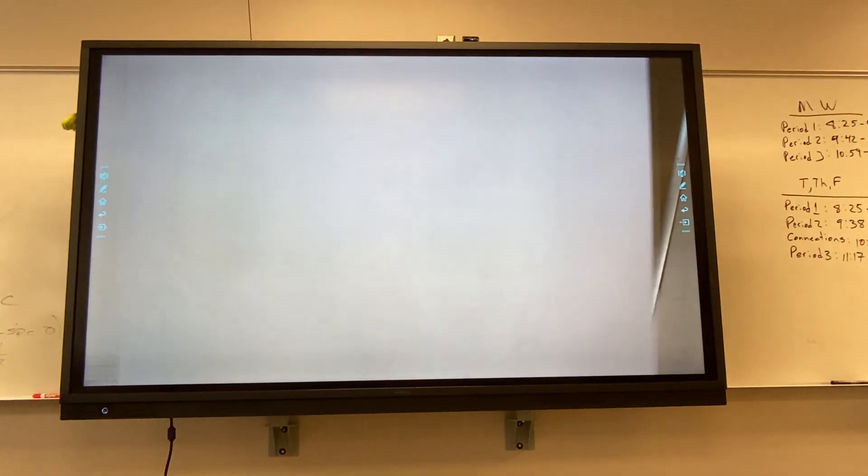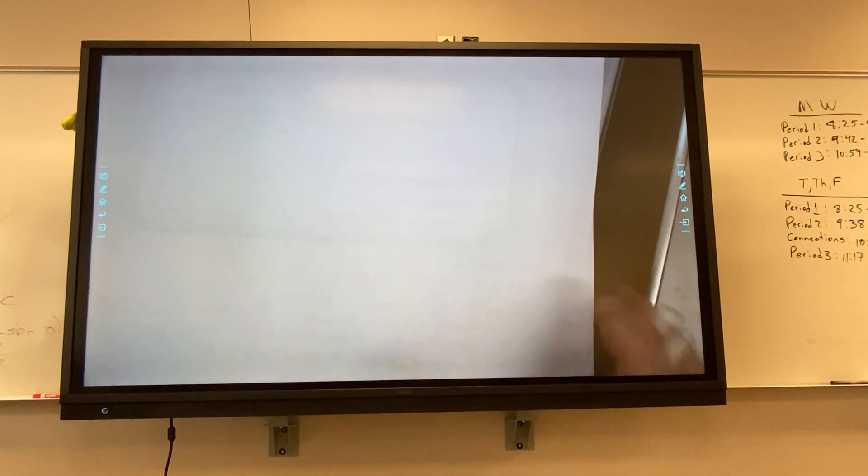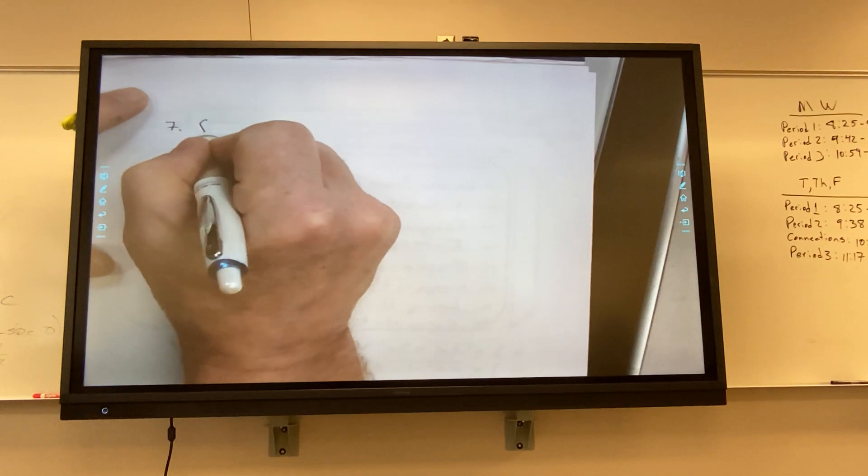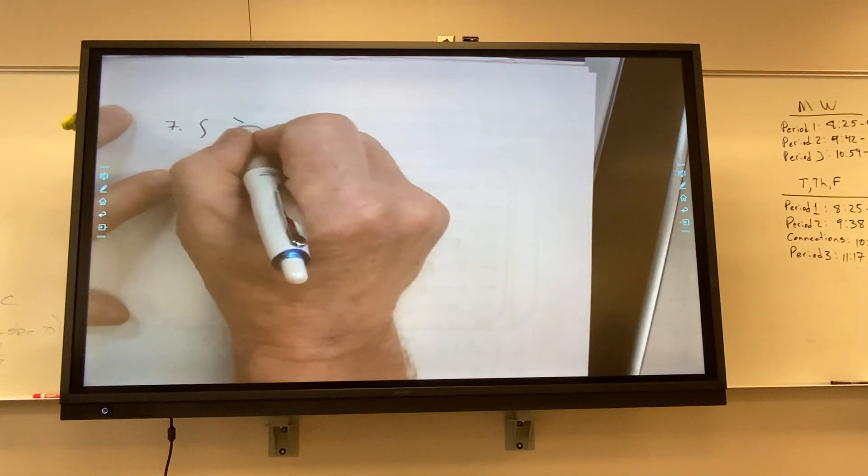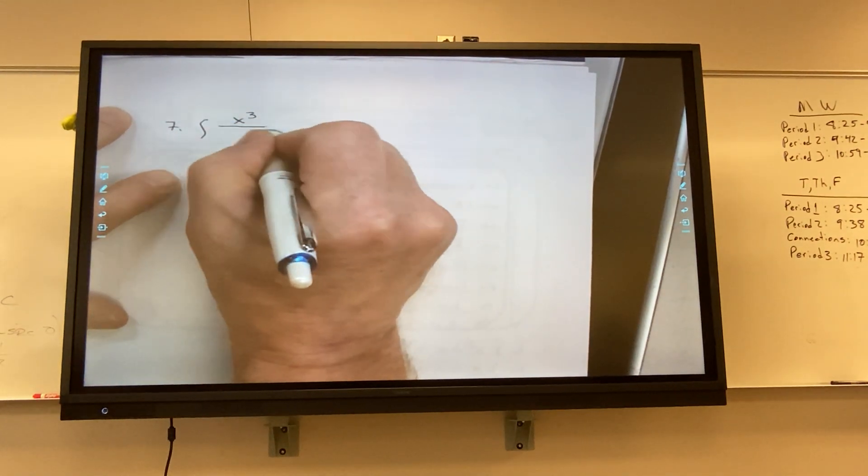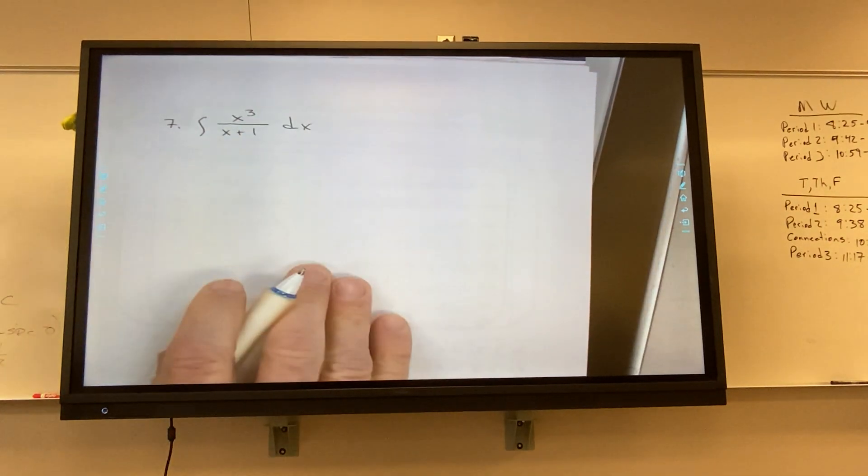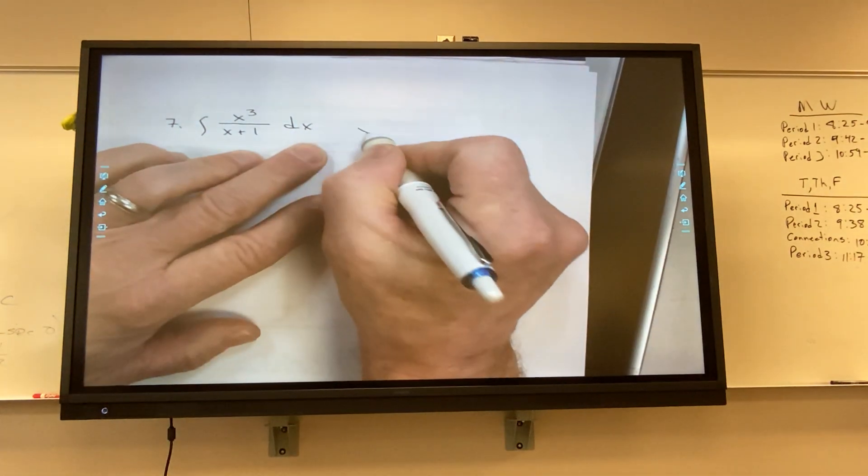Okay. Callan, number seven, long division. Is the degree on top bigger than the degree on the bottom? It is. Do I have a binomial on the bottom?